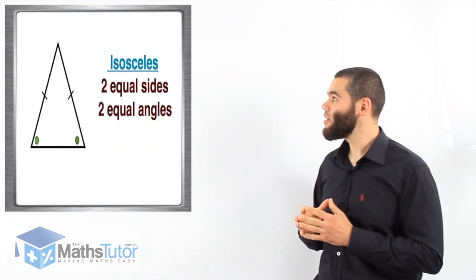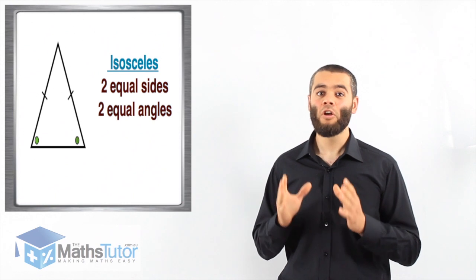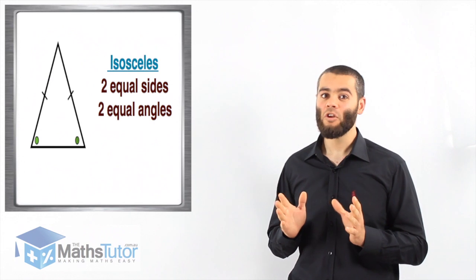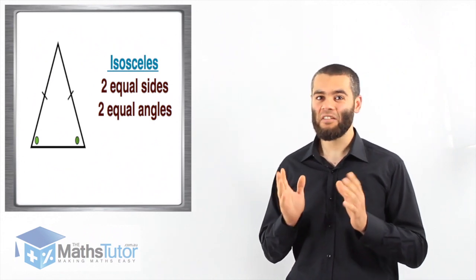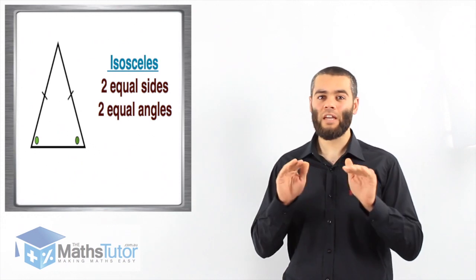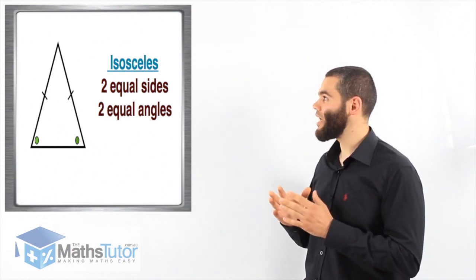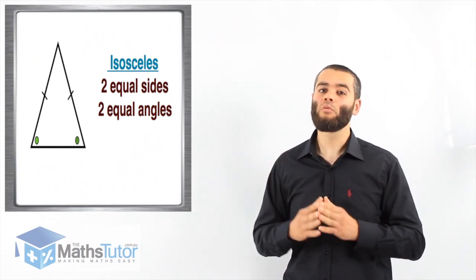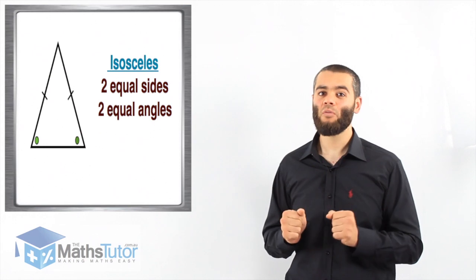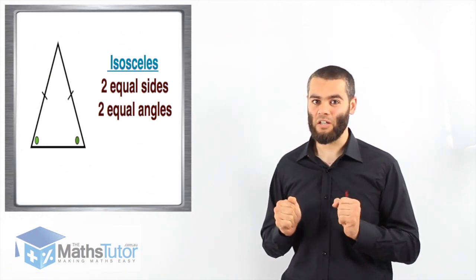Then we have the isosceles triangle. It has two equal sides and two equal base angles, meaning that the two angles on the base are going to be equal. They are adjacent, next to the two equal sides. So whenever you think of isosceles triangle, you know straight away the two angles that are adjacent to the two sides are also equal.